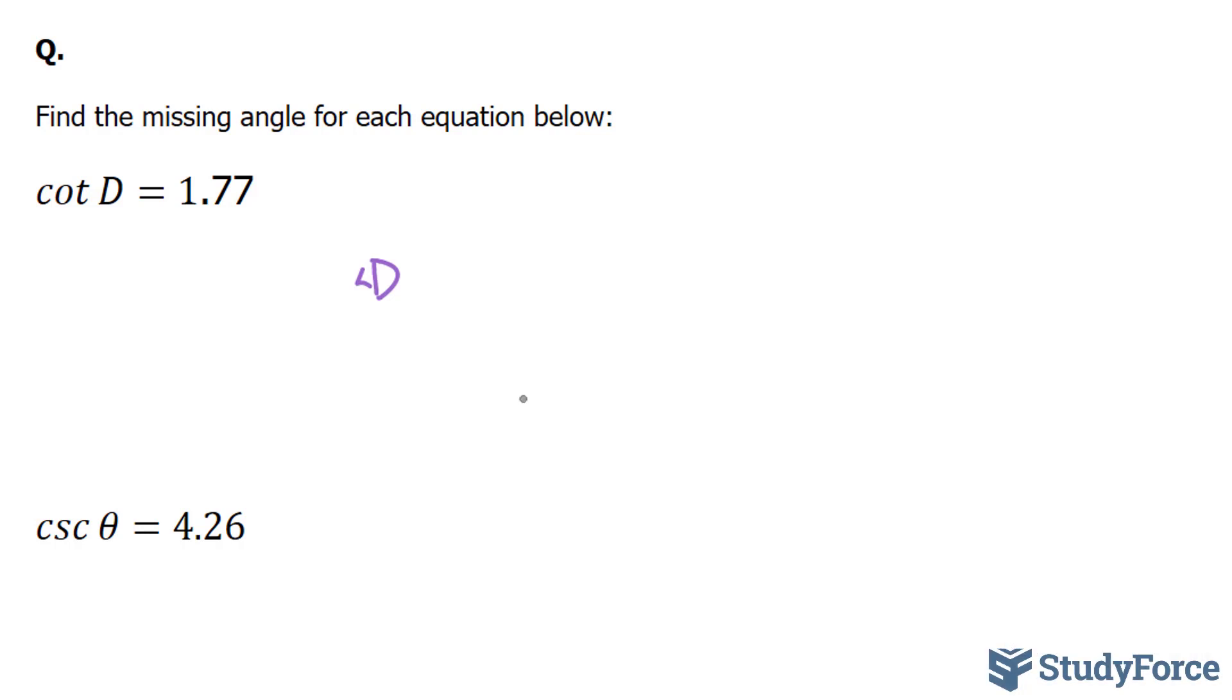Here's what I mean. Remember that cotangent D is equal to one over tangent D, or tangent D is equal to one over cotangent D. So remember cotangent D, according to this, is equal to 1.77.